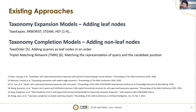There are two lines of research to tackle taxonomy completion. The first is taxonomy expansion models, which aim to add leaf nodes to the taxonomy; researchers in this line include TaxoExpand, Arborist, STEAM, and HALF. The other is taxonomy completion models, which directly tackle this task and are aimed at adding non-leaf nodes. TaxoOrder can add queries as leaf nodes in order, but cannot add the query between existing seed taxonomy nodes, which limits its application. The second work is Triply Matching Network, which matches the representation of a query node and the candidate position. By the time of our project, it is the only paper that can add queries between seed taxonomy nodes, and this is our main baseline.